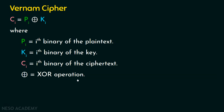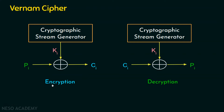Let's see the working of Vernam cipher with the help of a diagram. This is the encryption process and this is the decryption process. The plaintext is provided here, and this is the cryptographic stream generator — that is the key generator — which generates keys. The plaintext bit is XORed with the key bit and finally we get the ciphertext bit. This Vernam cipher works on bits rather than letters, so only a bitwise XOR operation is carried out.